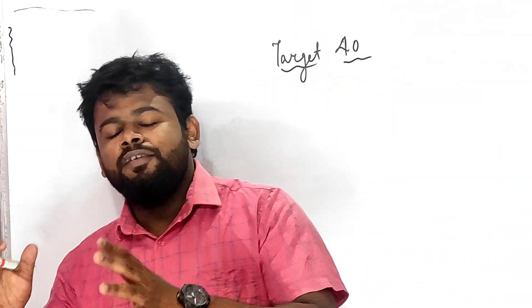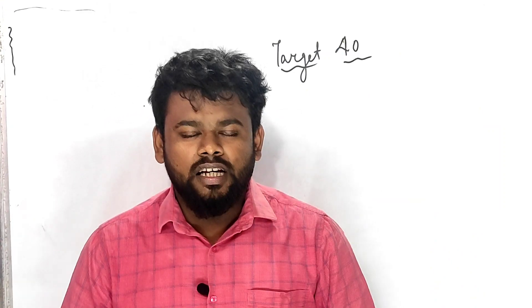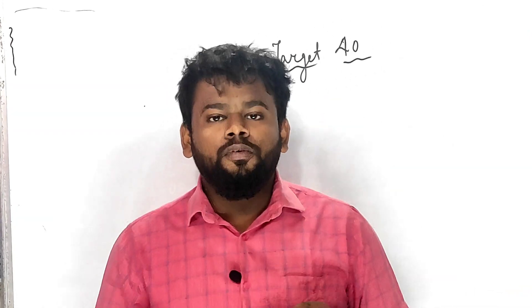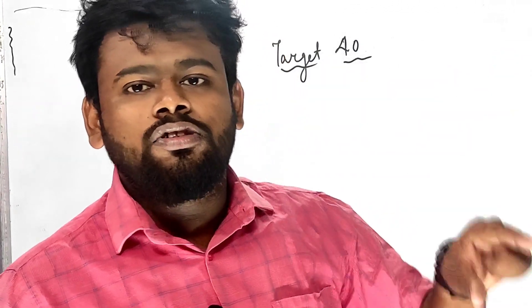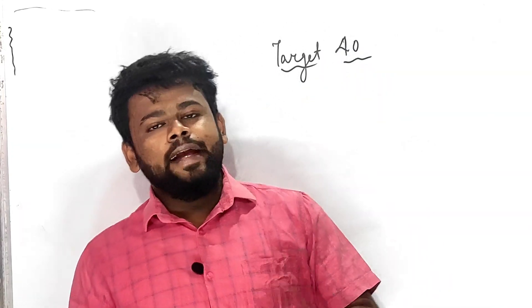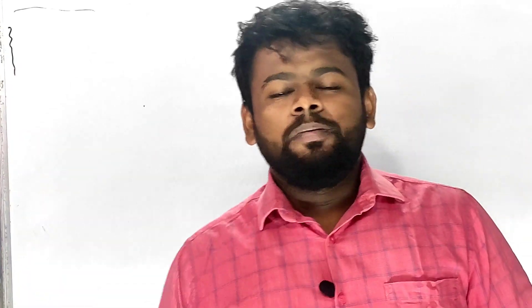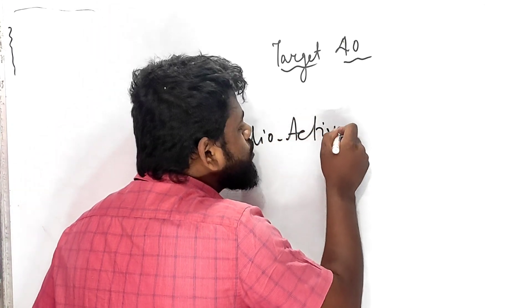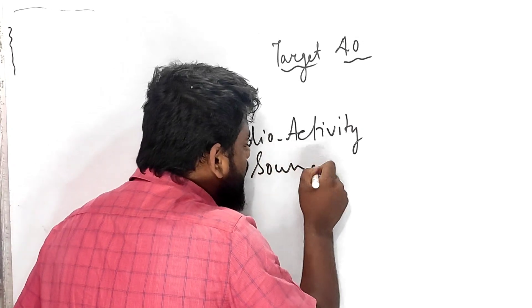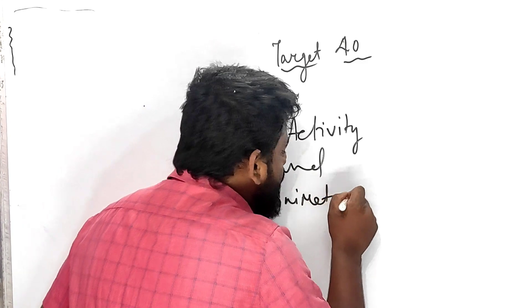Let us look at which chapters and topics the questions will come from in your ICSE Class 10 Semester 2. There are 3 to 4 units. Unit 1 is Sound. Then comes Electricity, which includes house circuits and Electromagnetism — all in one unit. Radioactivity is one unit. And Calorimetry is one unit. You have to give a lot of time to Electricity, Radioactivity, Sound, and Calorimetry.